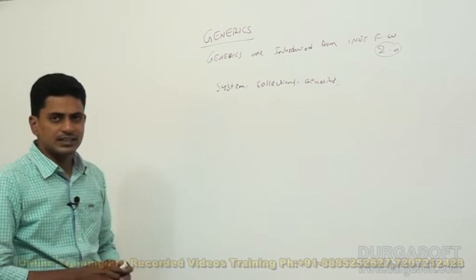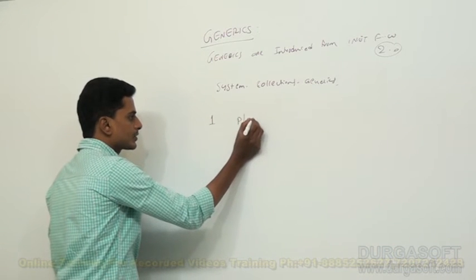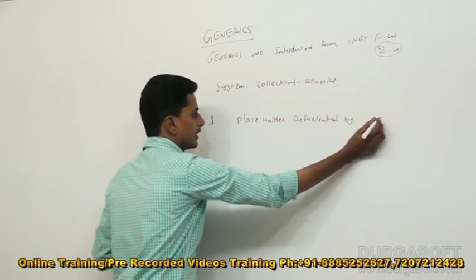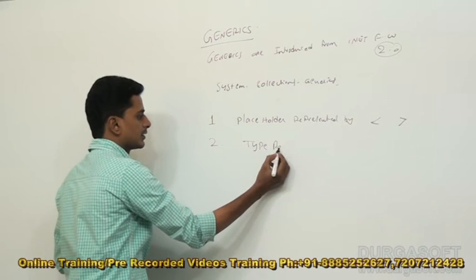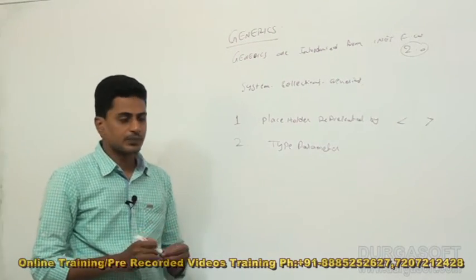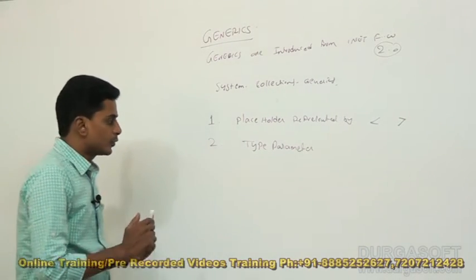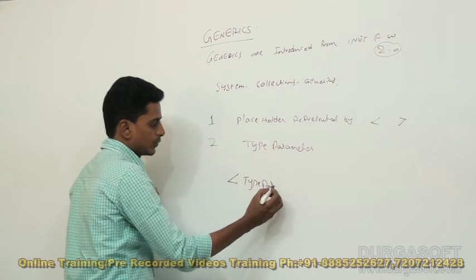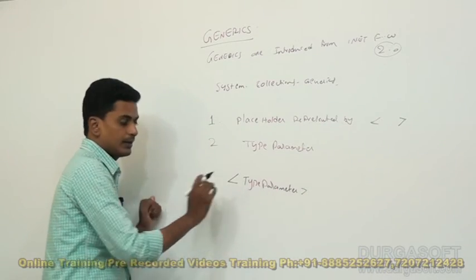To work with generics, we compulsorily need to use two things: one is a placeholder, represented by angular brackets, and the other is a type parameter. The most important thing is that the type parameter should always be enclosed within the placeholder.